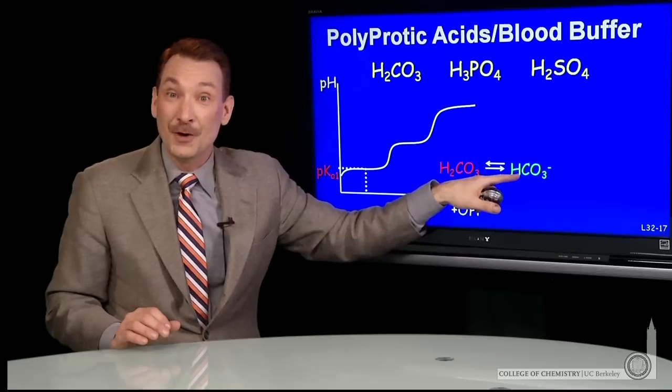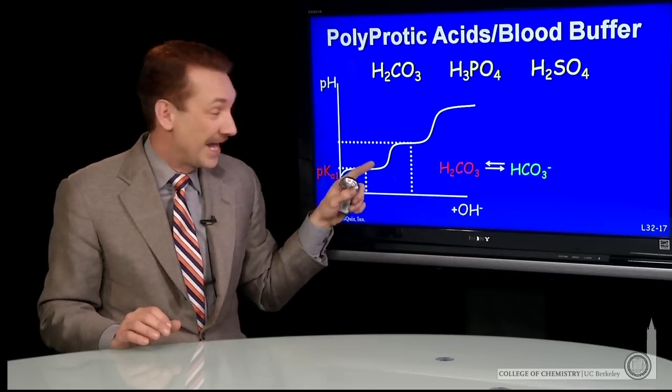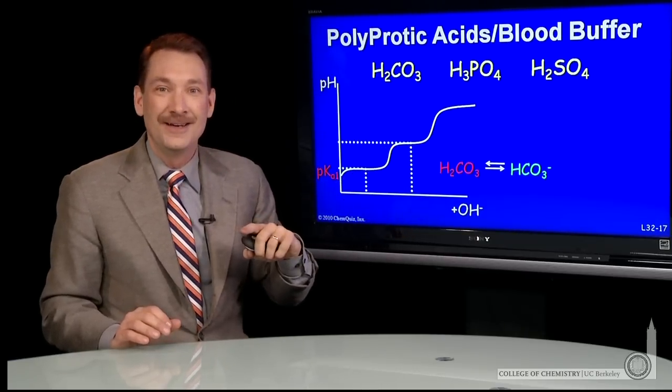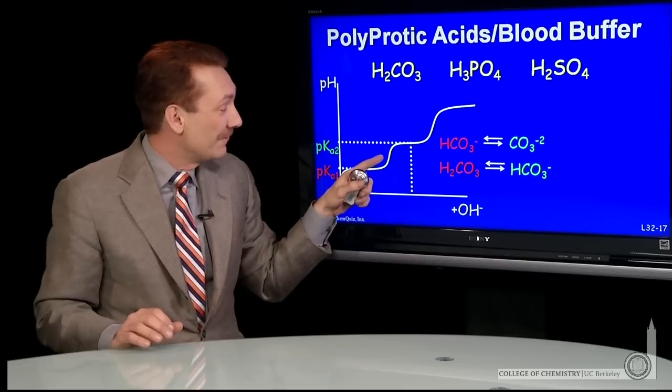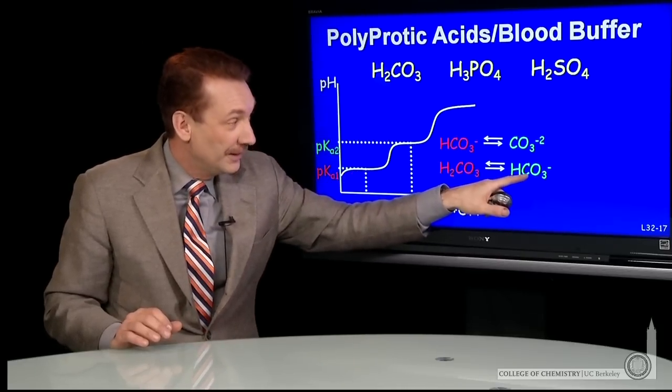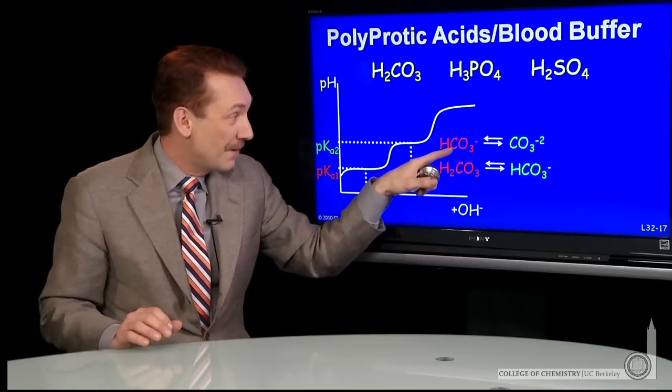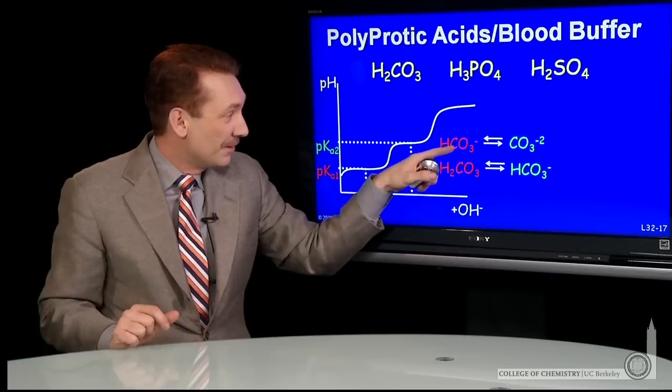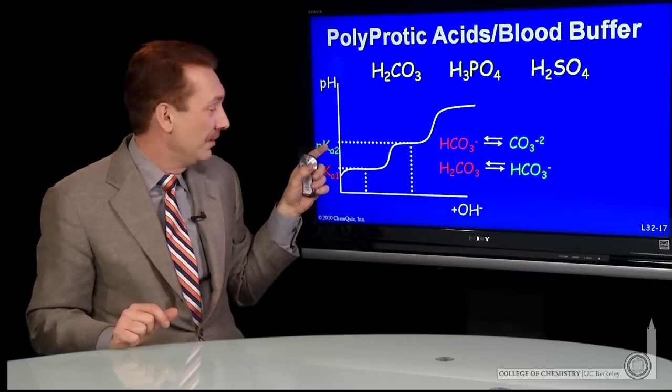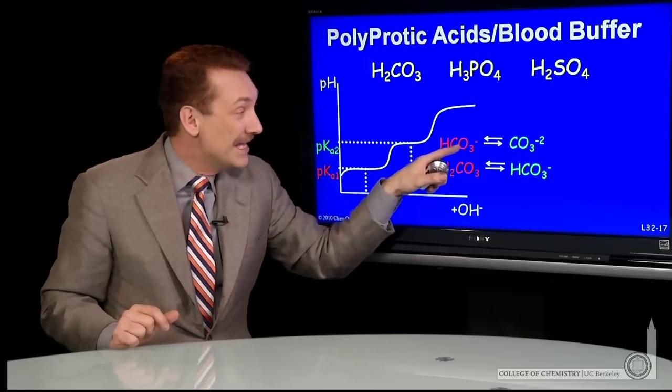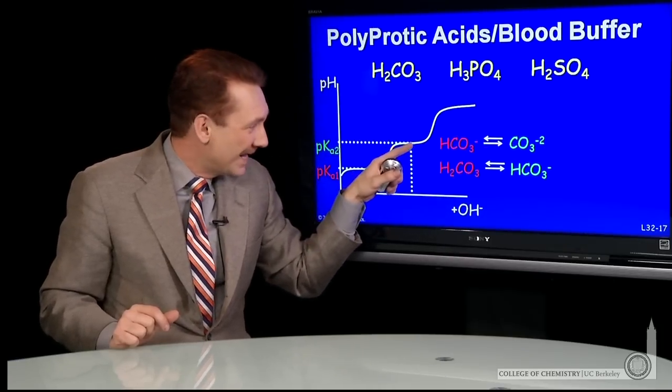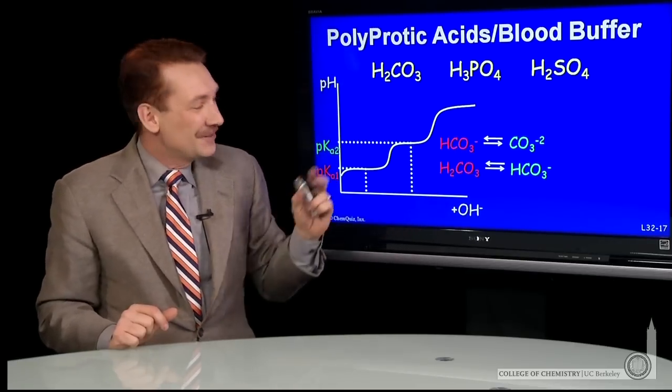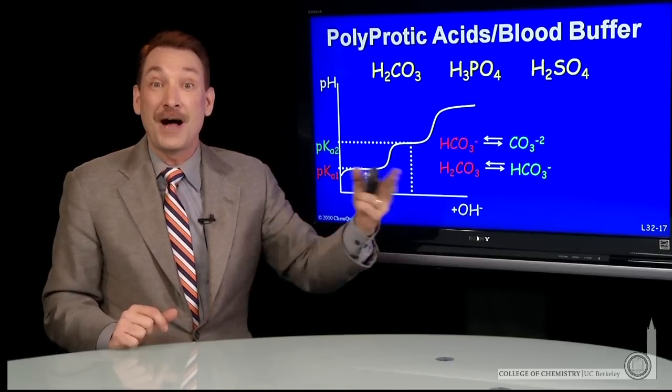But now I can start another titration of this proton. This proton has a higher pKa. So now I'm going to go through a second point where the pH is equal to the pKa, halfway to the second equivalence point. So let's look at the species that are available. So right here at the equivalence point, I had all HCO3 minus. And then HCO3 minus starts to act like an acid, and its proton is titrated. So as I go along the titration curve, the predominant form is the acid form. I'm below the second pKa. As I get to the second pKa, equal amounts of the acid and base form. And as I pass through the second pKa, the base form predominates, CO3 minus 2. So that's how I sketch out the titration curve of polyprotic acids.